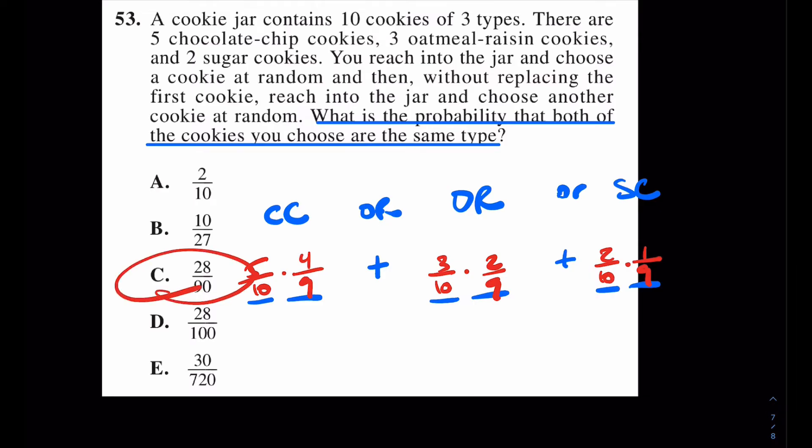Tell me if that made any sense at all. It should make sense, again, because this is the probability if you got two chocolate chips in a row. This is the probability that you got oatmeal raisins in a row. And this is the probability that you got two sugar cookies in a row. And then you have to add them, because it could be any of them.